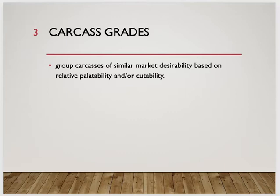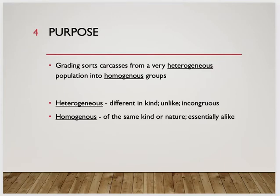When we look at carcass grades, we group carcasses of similar market desirability based on relative palatability and cutability — just like beef yield and quality grading, we do the same on the pork side. When we grade, we sort carcasses from a heterogeneous population into a homogeneous group. Heterogeneous means different kinds; homogeneous means the same kind — they look alike or share the same traits.